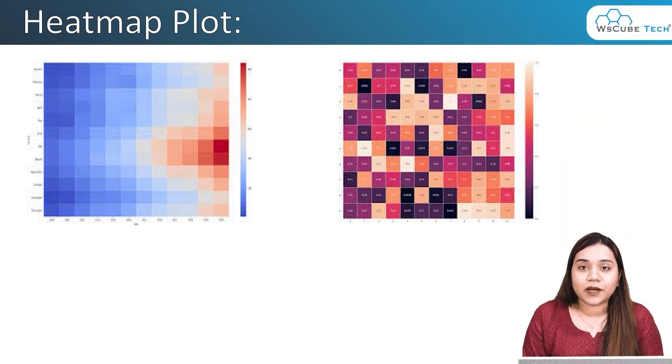Hello everyone, a very warm welcome to WS Cube Tech. In our previous session we learned how to create a scatter plot in seaborn. In today's session we will be starting with a new plot called a heat map. As the name suggests, it's related to colors — there will be high intensity and low intensity of colors used to create this plot. Let's have a look at how it looks.